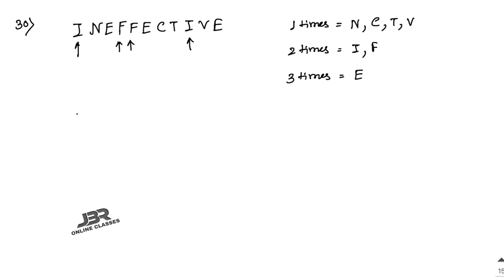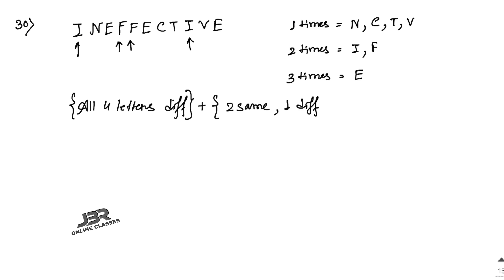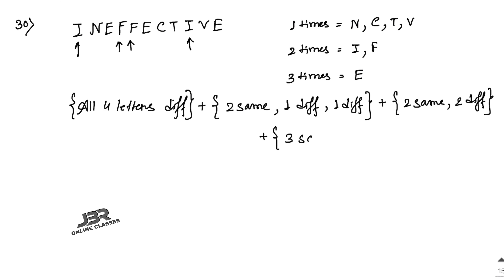There are 4 cases. Case 1: All four letters are different. The distinct letters are I, N, E, F, C, T, V — that is 7 distinct letters. We choose 4 and arrange them, giving 7P4 = 7 × 6 × 5 × 4 = 840.